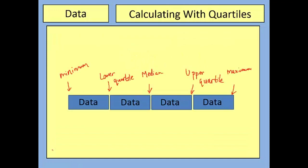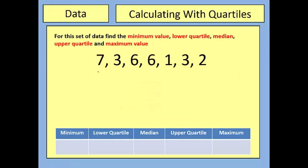Now that we've met these terms, let's look at what you might have to do in an exam. Here we are asked to find the minimum value, lower quartile, median, upper quartile and maximum value. Unlike the height example, these numbers are not already in order. So the first thing you need to do is put them in order. We have 1, 2, 3, 3, 6, 6, and 7. The minimum value is 1, and the maximum value is 7.